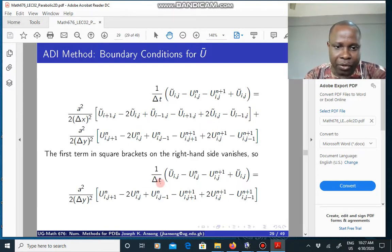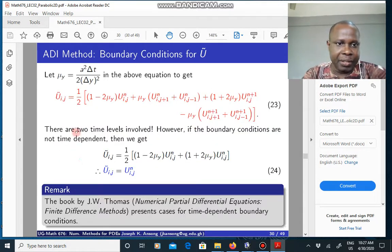You can multiply through by delta T. You can combine U tilde and U tilde. That gives you 2 U tilde. And then, if you simplify this expression, what you get is this equation here, where we just let mu_y to be equal to this.